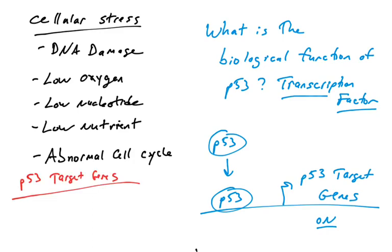Of the genes that it turns on, there are different categories. One category of genes that p53 turns on are genes that can stop the cell cycle, cell cycle arrest genes. Under any condition of cellular stress, you would want to stop the cell cycle so you can fix the DNA damage, so you're not propagating the DNA damage in daughter cells, or you can build up oxygen or nutrient levels.